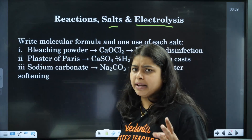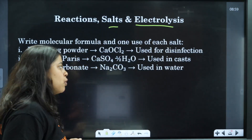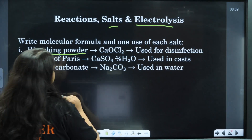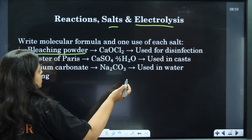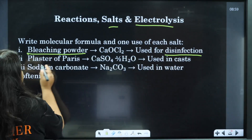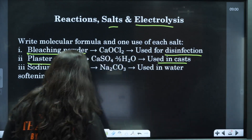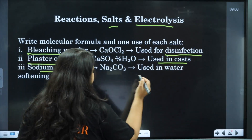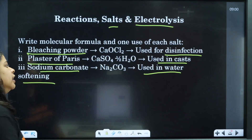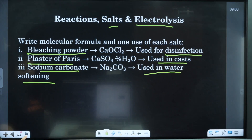Next: salts and electrolysis. Write the molecular formula and one use of each salt. Bleaching powder is used for disinfection. Plaster of Paris is used in casts. Sodium carbonate is used in water softening.